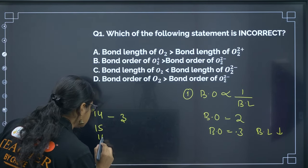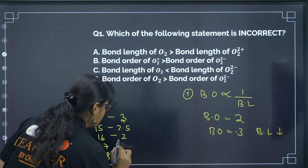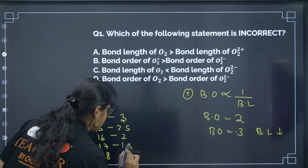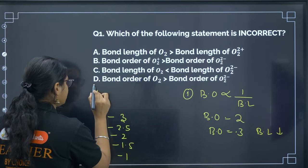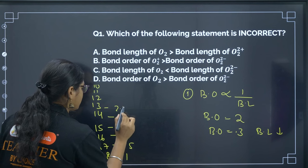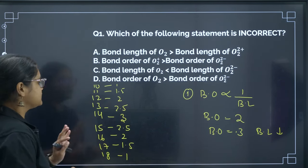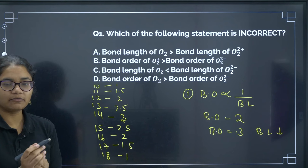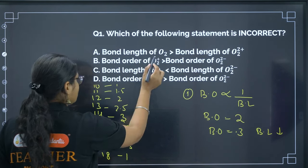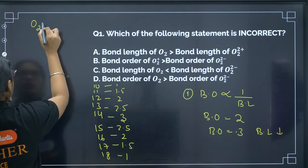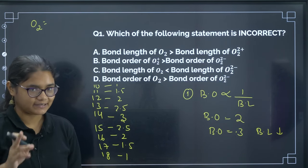So for electron counts 14, 15, 16, 17, 18, the corresponding bond orders are 3, 2.5, 2, 1.5, and 1. On the other side, for 13, 12, 11, and 10, the bond orders are 2.5, 2, 1.5, and 1. These numbers represent the number of valence electrons. Now for the first option, O2: atomic number of oxygen is 8, so 8 + 8 = 16 electrons, giving bond order of 2.